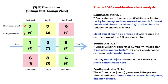Next is the southwest — a nine and four combination. The number four is a wood element and it generates the number nine purple star, which is fire element. So it's a good combination indicating fame, career success, intelligence, and money luck. This is one of the best areas for the Zheng house in 2020.